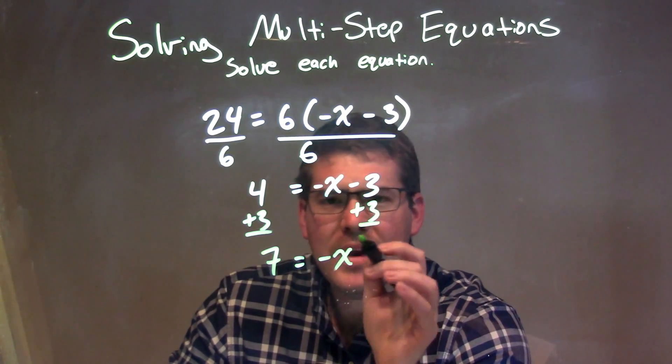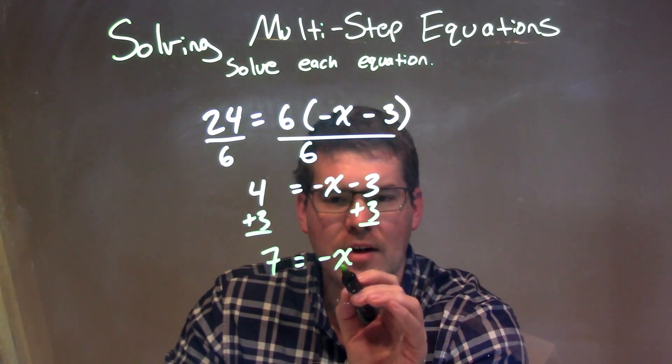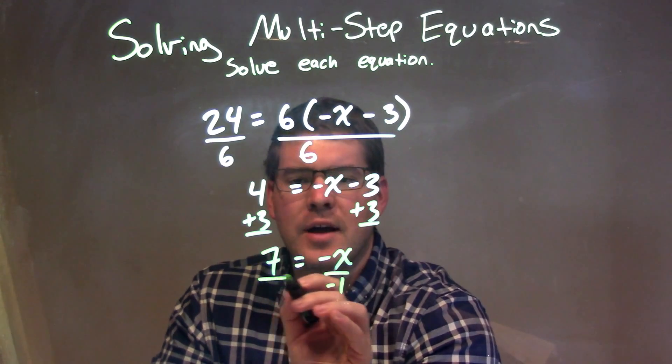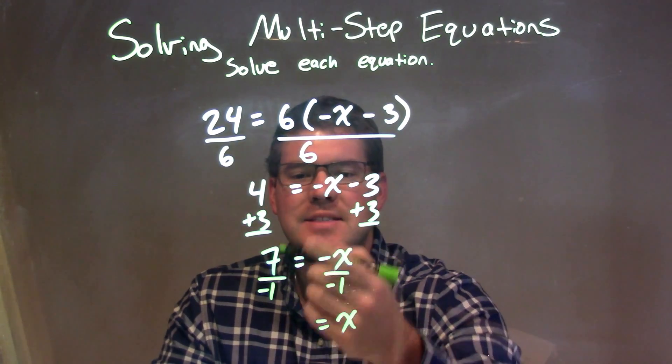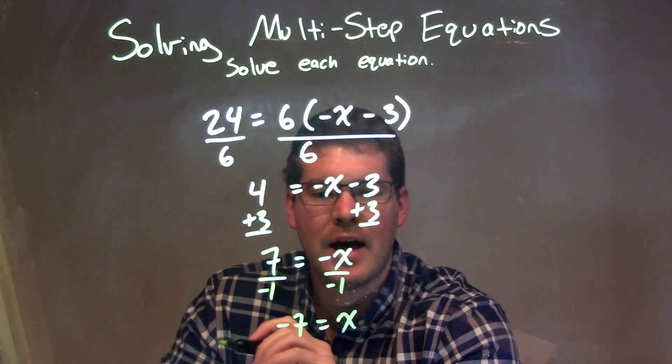Well, that negative x right there can turn into a positive x. I need to divide by negative 1 on both sides, leaving me with just x by itself on the right, and 7 divided by negative 1 being negative 7 on the left.